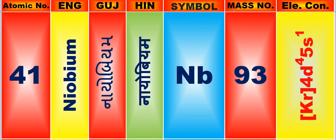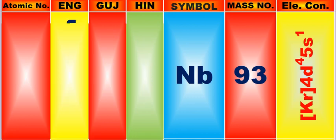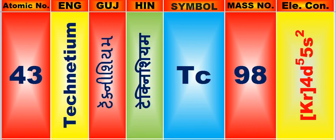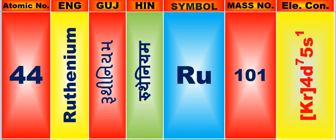Atomic number is 41, name of atom is Niobium. Atomic number is 42, name of atom is Molybdenum. Atomic number is 43, name of atom is Technetium. Atomic number is 44, name of atom is Ruthenium.